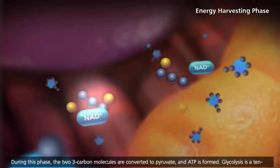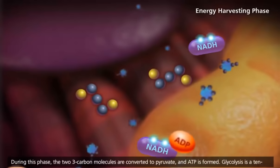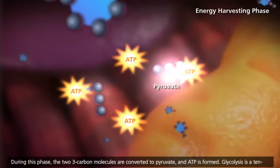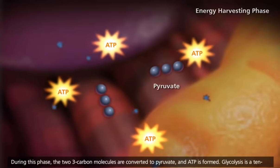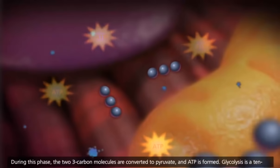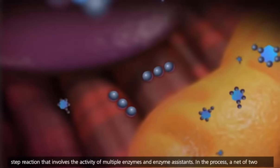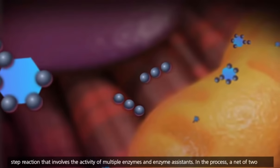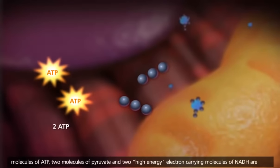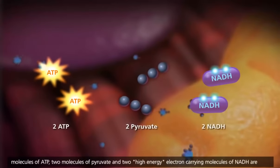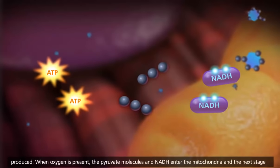During this phase, the two three-carbon molecules are converted to pyruvate, and ATP is formed. Glycolysis is a 10-step reaction that involves the activity of multiple enzymes and enzyme assistance. In the process, a net of two molecules of ATP, two molecules of pyruvate, and two high-energy electron-carrying molecules of NADH are produced.